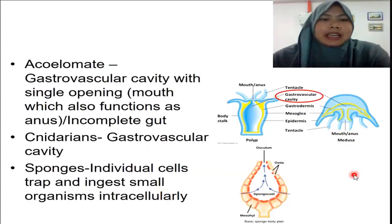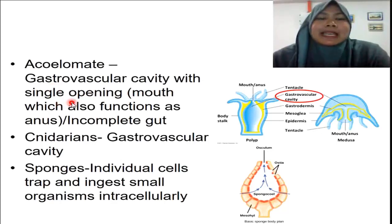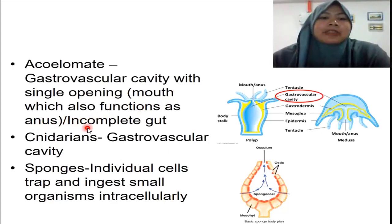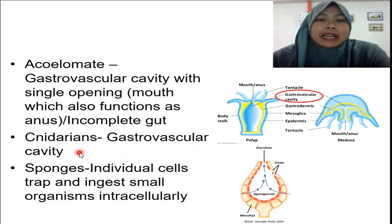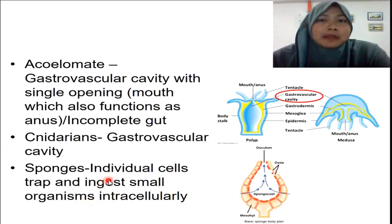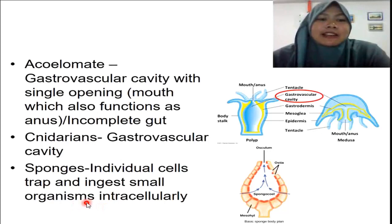As for acoelomates, they do not have a body cavity. What they have is just a gastrovascular cavity with a single opening acting as both mouth and anus, which we call an incomplete gut. This can be found in animals in the phylum Cnidaria — for example, the jellyfish, which has a gastrovascular cavity. As for sponges, they do not have tissue; they just have specialized cells, and thus they trap and ingest organisms intracellularly.